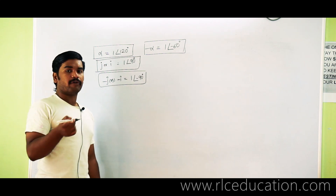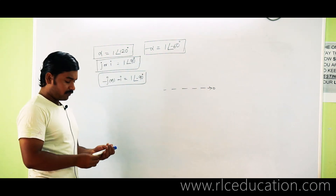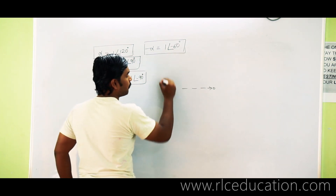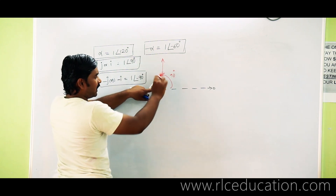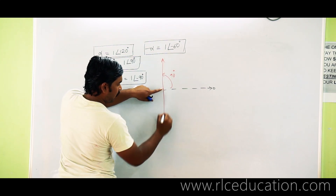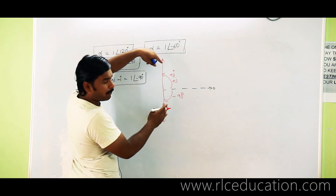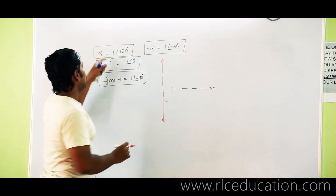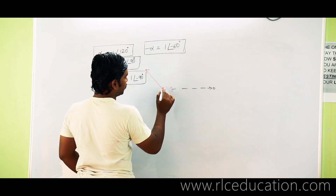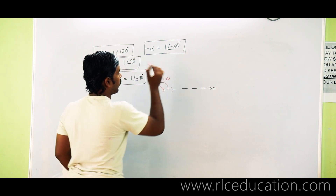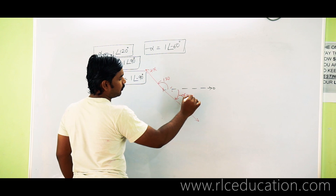Any operator covers a range of 180 degrees. So plus alpha rotates by 120 degrees, and minus alpha equals 1 at minus 60 degrees — not minus 120. This is because the range between plus and minus is always 180 degrees: 120 minus 180 equals minus 60.